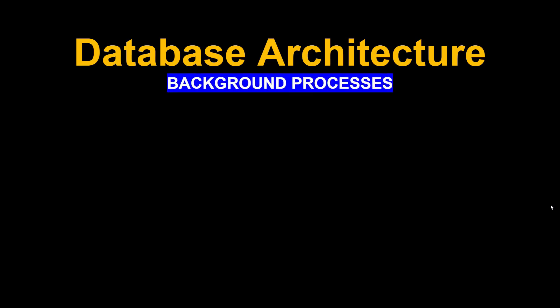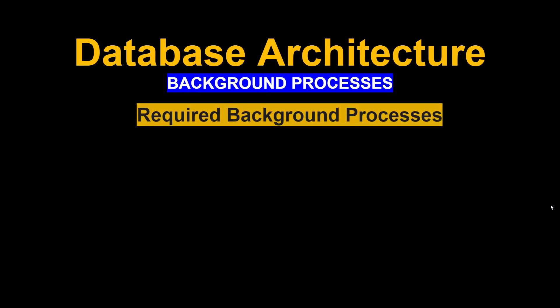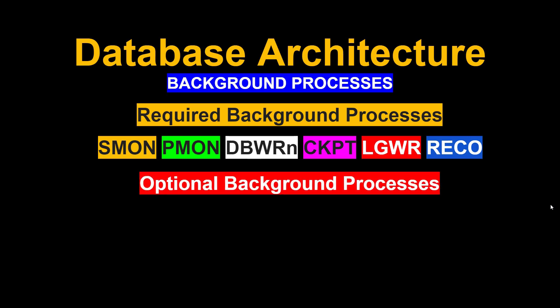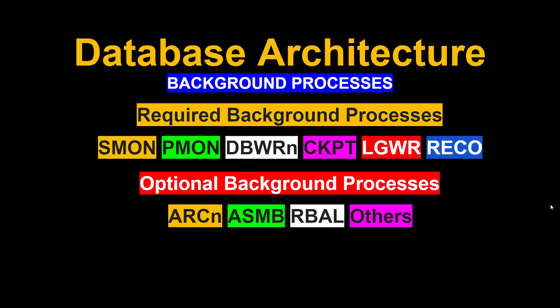Now let's discuss background processes. Background processes are of two types: required background processes and optional background processes. The required background processes are SMON, PMON, Database Writer, Checkpoint, Log Writer, and Recover. For optional background processes there are many running in Oracle database — examples include Archive, ASMB, RBL, and others. Let's discuss them one by one.